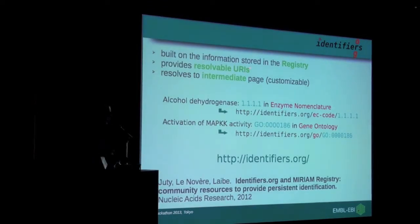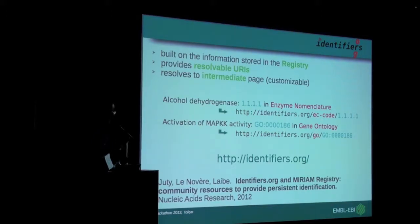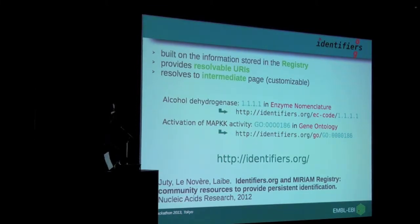Moving on to Identifiers.org — this is a layer built on top of the registry to allow generation of resolvable URIs. Because there are a number of locations where you can get the information, it resolves through an intermediate page. For example, alcohol dehydrogenase, which has EC number 1.1.1.1 in the enzyme nomenclature data collection, has a URI with the Identifiers.org stem, the namespace as recorded in the registry, and the identifier from the dataset. We store information about the data collection and about the resource, but we don't actually store the data itself. This is our most recent publication to find out how the registry and Identifiers.org interact.